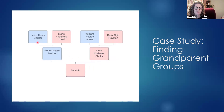Here you can see Lucretia's parents. She has four grandparent lines: she should have a Becker line, a Carell line, a Schultz line, and a Royson line when doing — in an ideal world — the Leeds method.